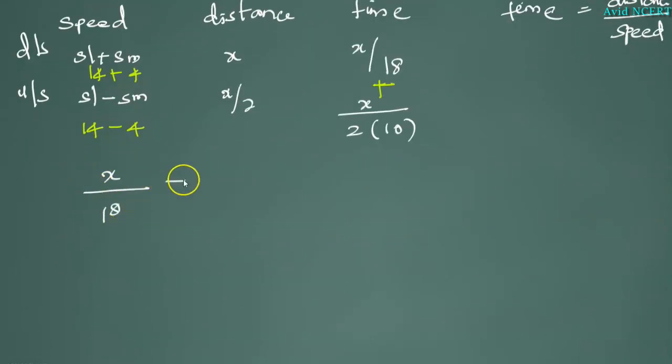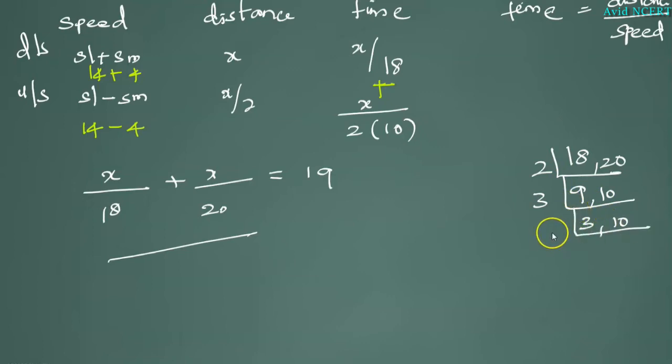X by 18 plus X by 20 equals 19. The LCM for this is, let me show how to get LCM: 2 times 9 is 18, 2 times 10 is 20, 3 times 3 is 9 and 10, 3 times 1 is 3 and 10.